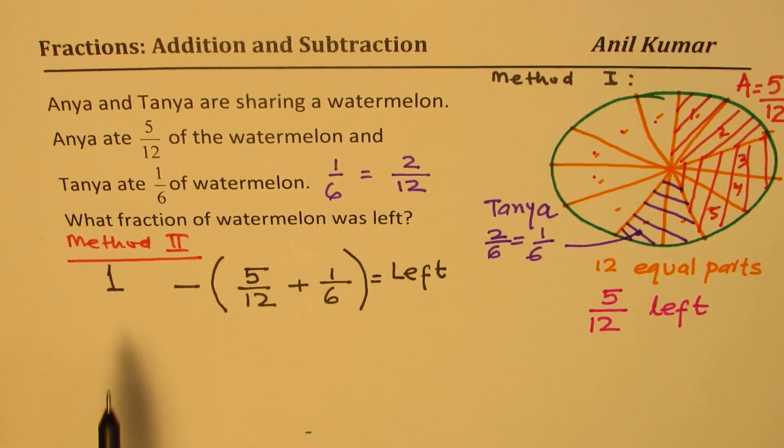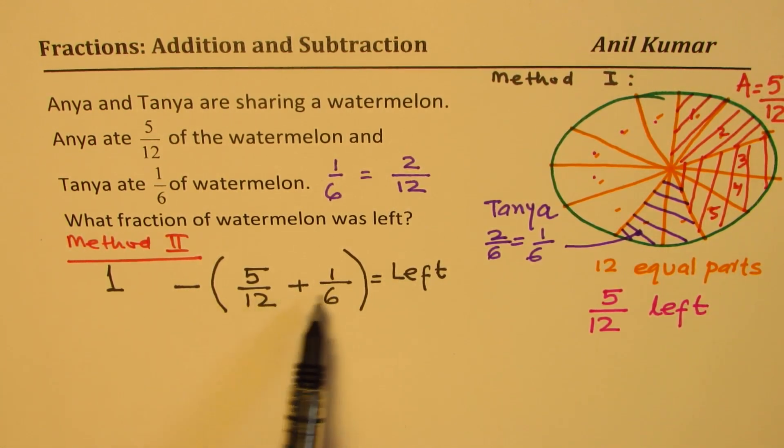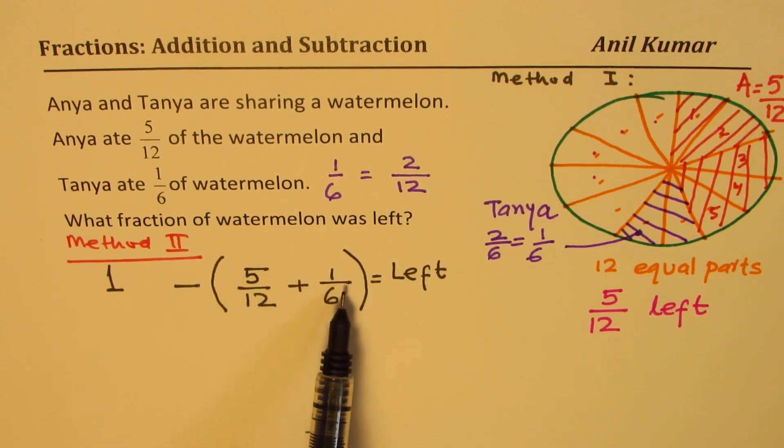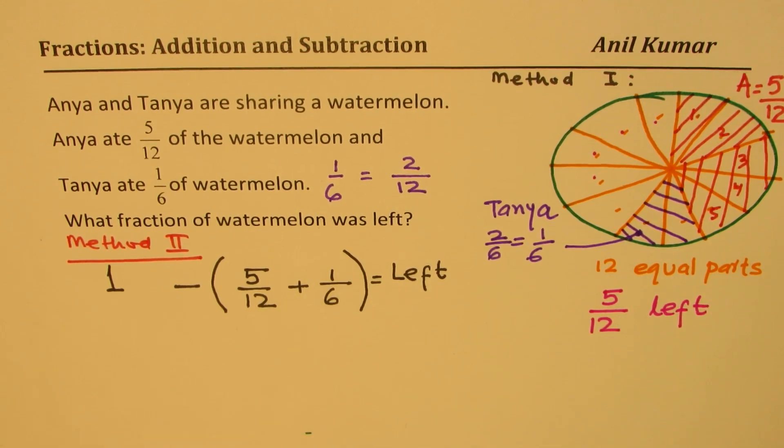Left means you have to take away what they ate. So that much is left. So from the whole, we take away what they ate, 5 out of 12 and 1 out of 6. It is important to make this bracket to indicate that this total has been taken away, not just the first one. Both.